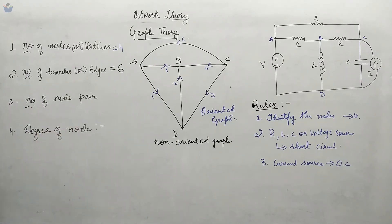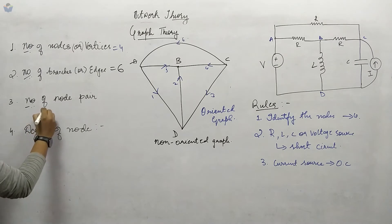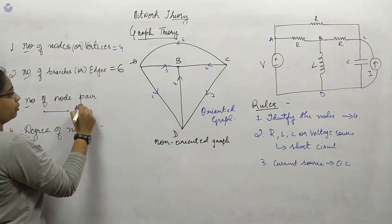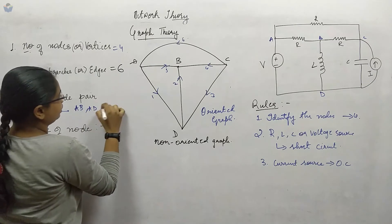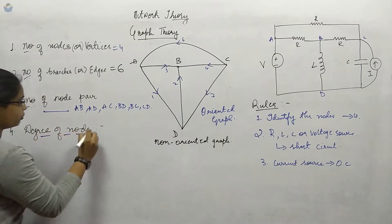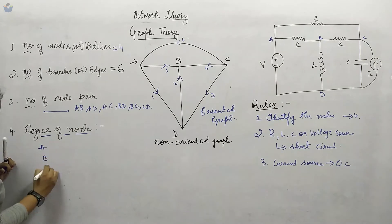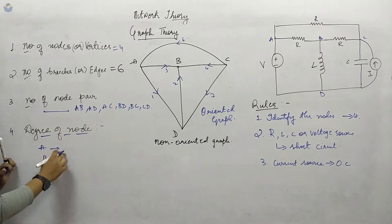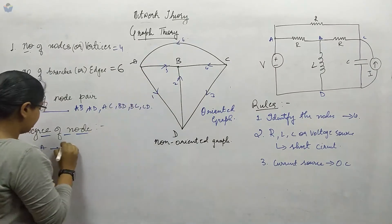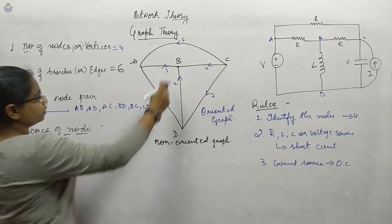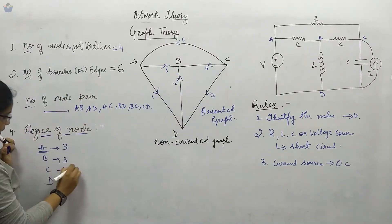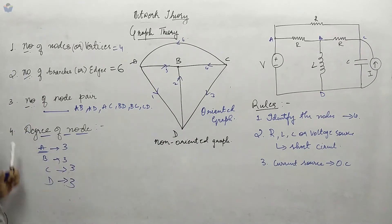In between two nodes, if there is one branch, we call it a node pair. Here the node pairs are AB, AD, AC, BD, BC, and CD. Next, the degree of a node is nothing but how many branches are connected to or outgoing from that node. For node A there are 3 branches, similarly B has 3, C has 3, and D also has 3.